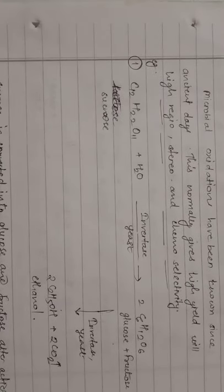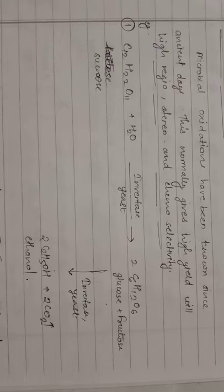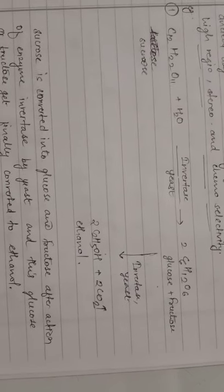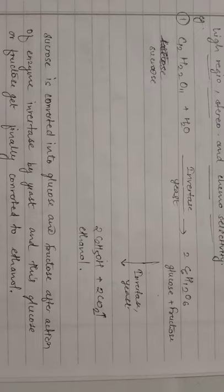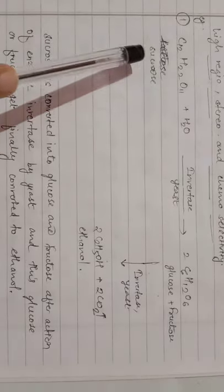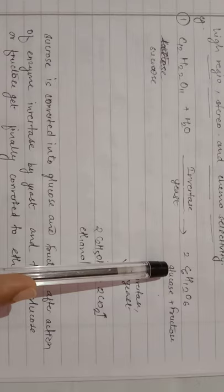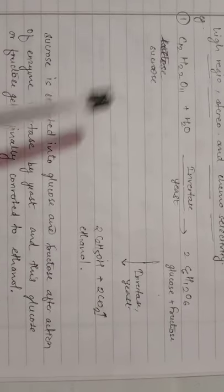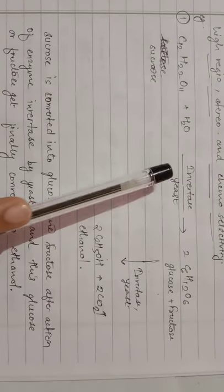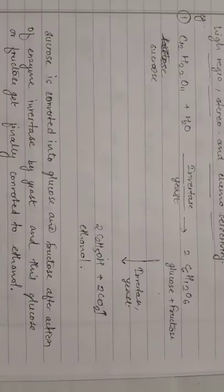Example of microbial oxidation: sucrose with water in the presence of yeast produces the enzyme invertase. This enzyme converts sucrose into glucose and fructose. The glucose or fructose is then further converted by invertase into ethanol. This is a reaction we have been using for many years — sucrose is ultimately converted into ethanol (alcohol). Here, invertase enzyme produced by yeast acts as the biocatalyst.